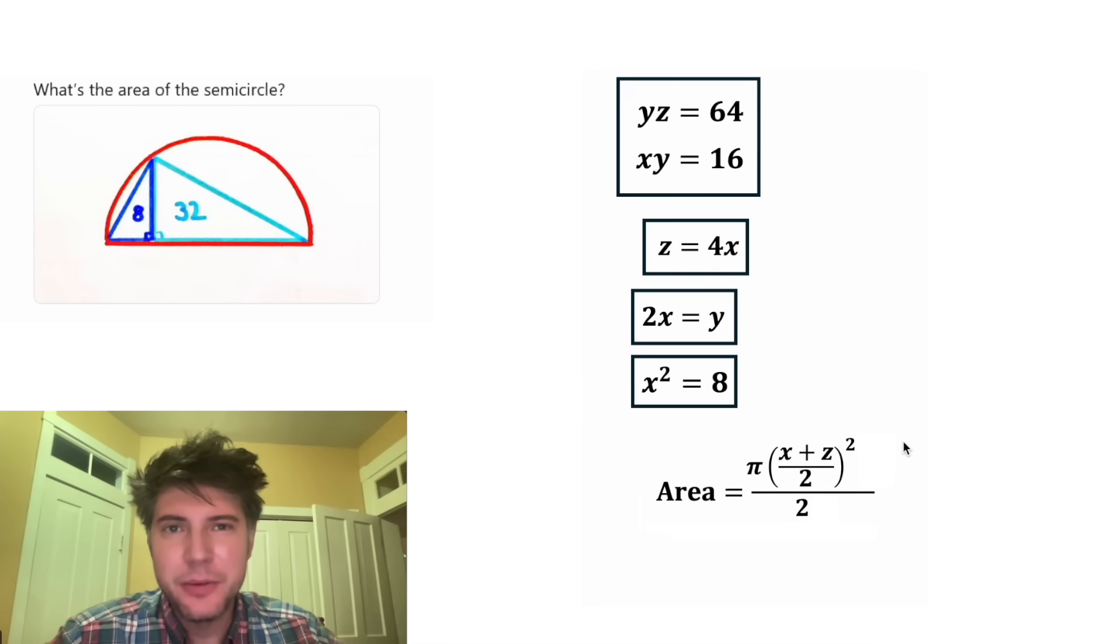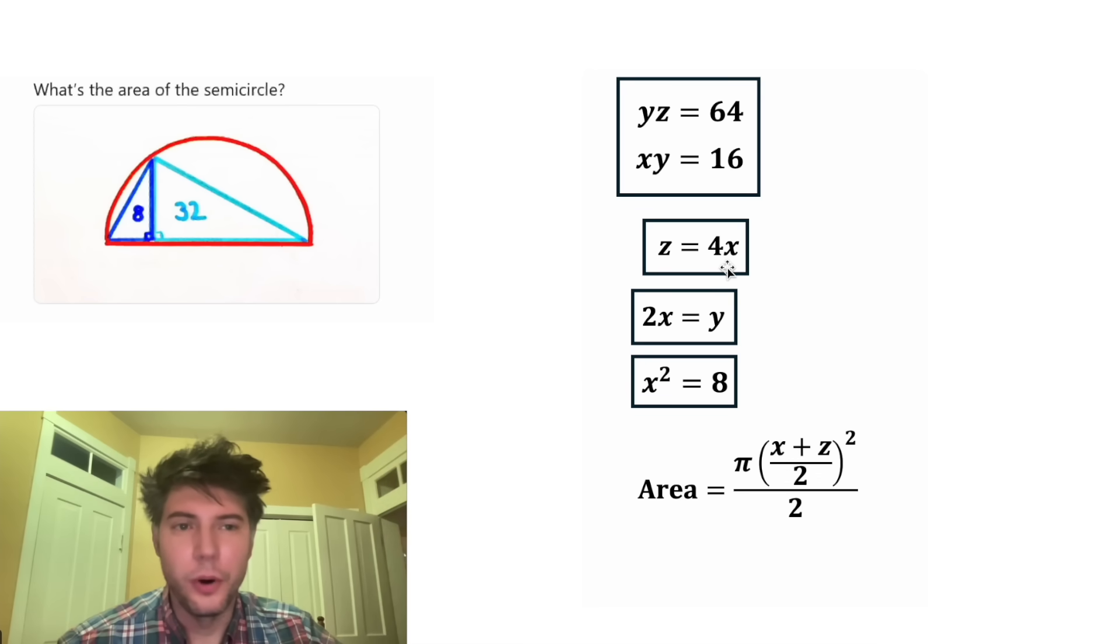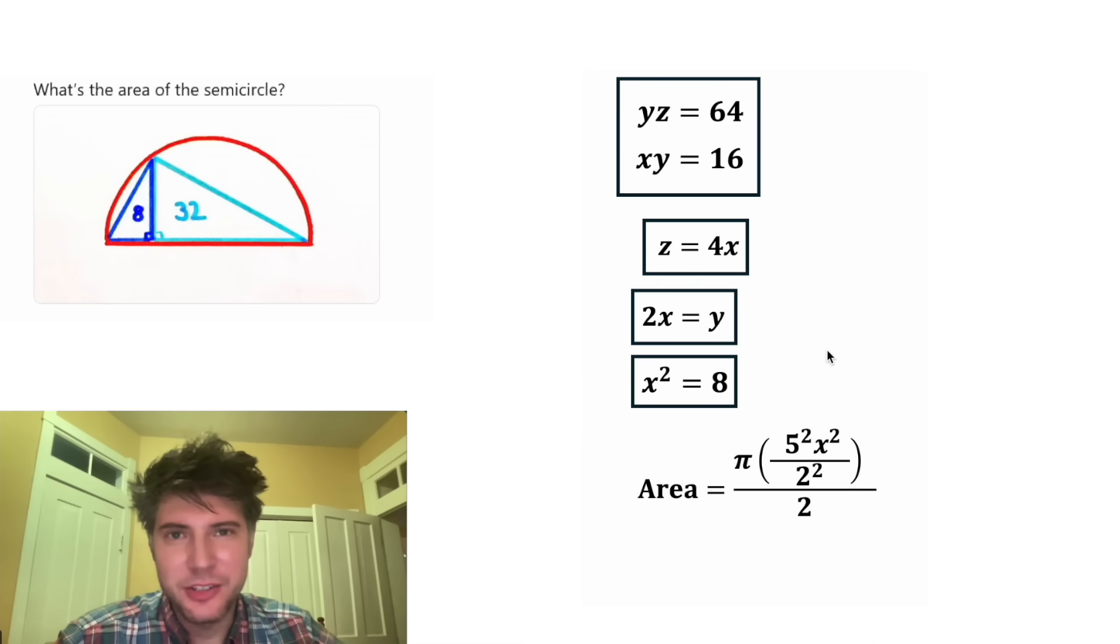Now I think we have everything we need to evaluate the area. We know that Z is equal to 4X. So in the place of this Z, let's plug in 4X. And then X plus 4X is 5X. For the next step, this exponent will distribute to the 5, the X, and the 2. That will give us 5 squared X squared 2 squared.